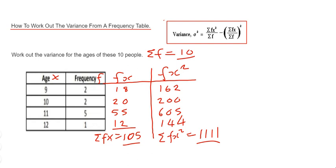Okay, so we can now put these numbers into the formula to work out the variance. So we've got sigma fx squared which is 1111, so we've got to divide that by sigma f which is our total frequency of 10.